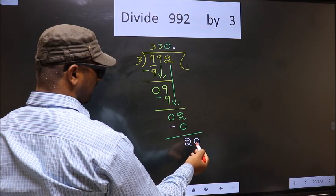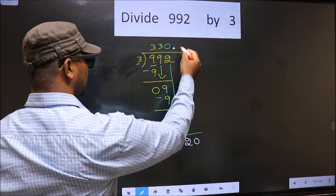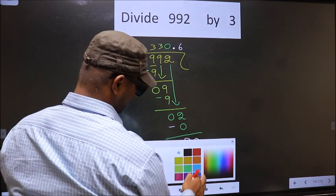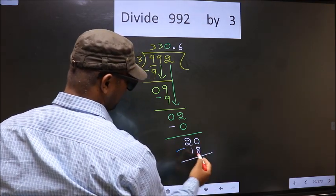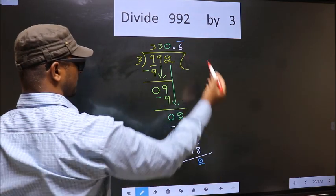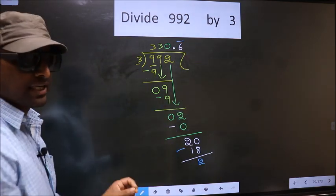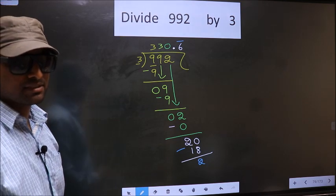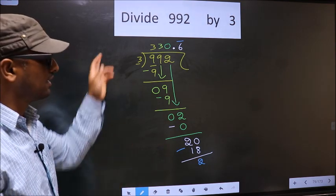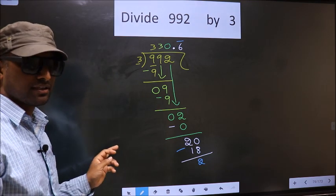So 20, a number close to 20 in 3 table is 3 times 6, 18. Now you subtract. We get 2 again. So we get a bar on 6. Did you understand where mistake happens? You should not do that mistake. Am I clear?